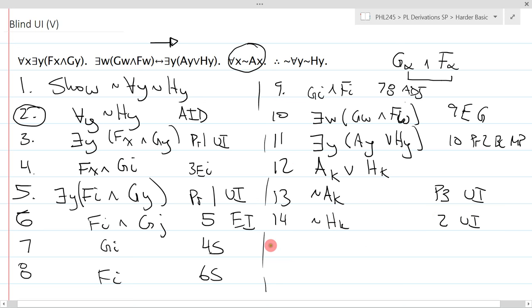Now, generating the contradiction is a breeze. On line 15, I'll modus tollens these things and get H K. That's 12, 13, MTP. And then, well, I'll just say 14 ID. That takes care of, oh, I only had one show line. Okay, that's the end of the proof.